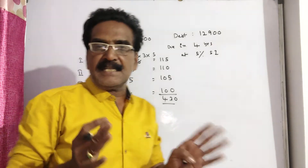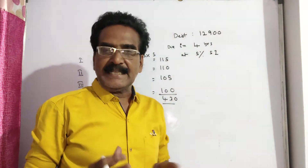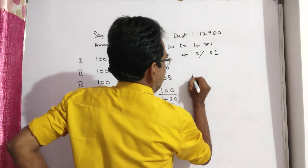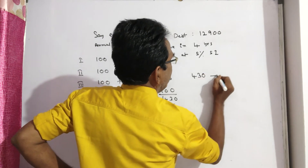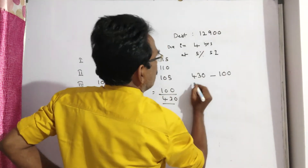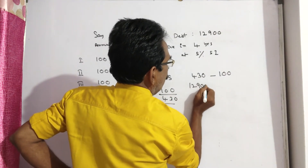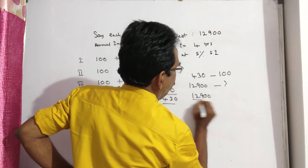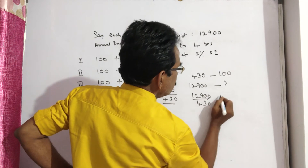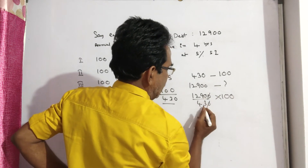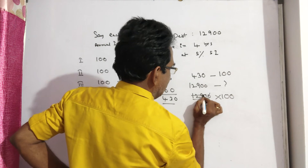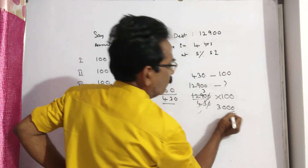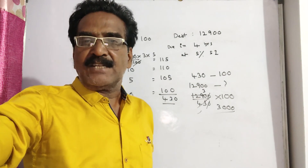Friends, if 430 is the total debt, then the installment will be 100. If the total due is 12,900, what is the installment? 12,900 divided by 430, multiplied by 100 — the zeros get cancelled, 43 threes are 30 into 100 — so 3000 is the actual annual installment.